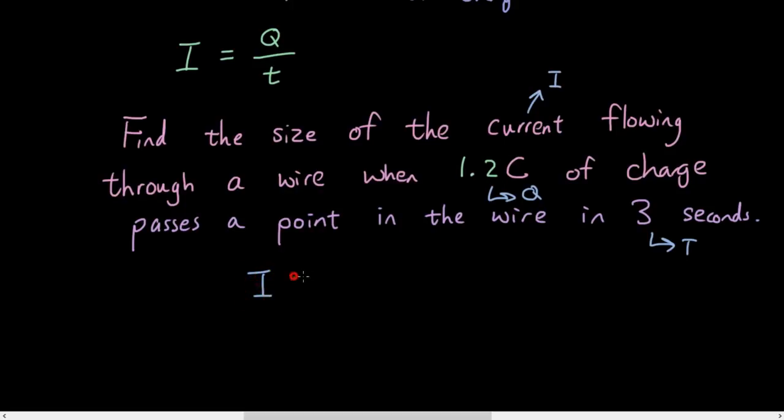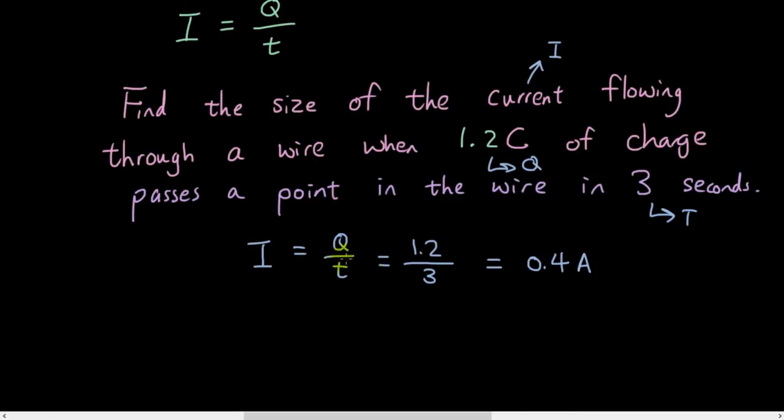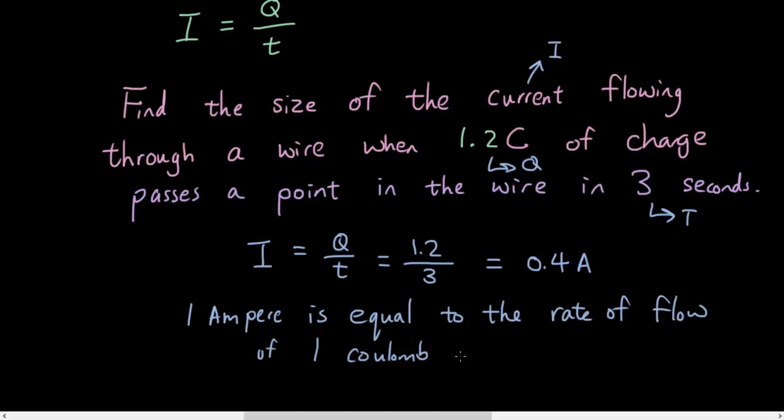So I is equal to Q over t, which is equal to 1.2 over 3, and the answer is 0.4 amps. And actually I am just going to add on what 1 amp is. 1 amp is equal to the rate of flow of 1 coulomb per second.